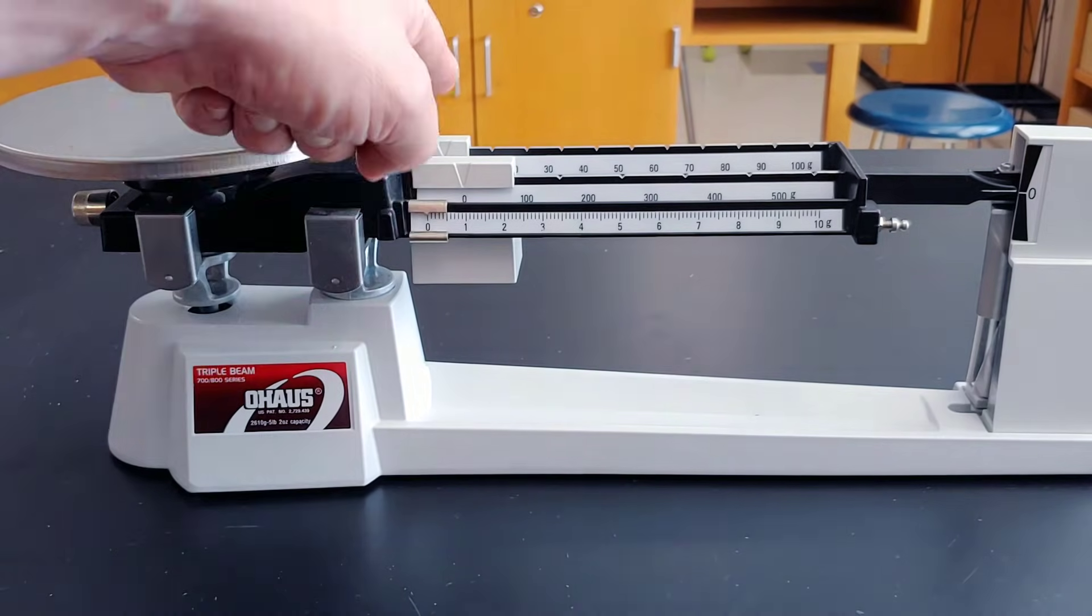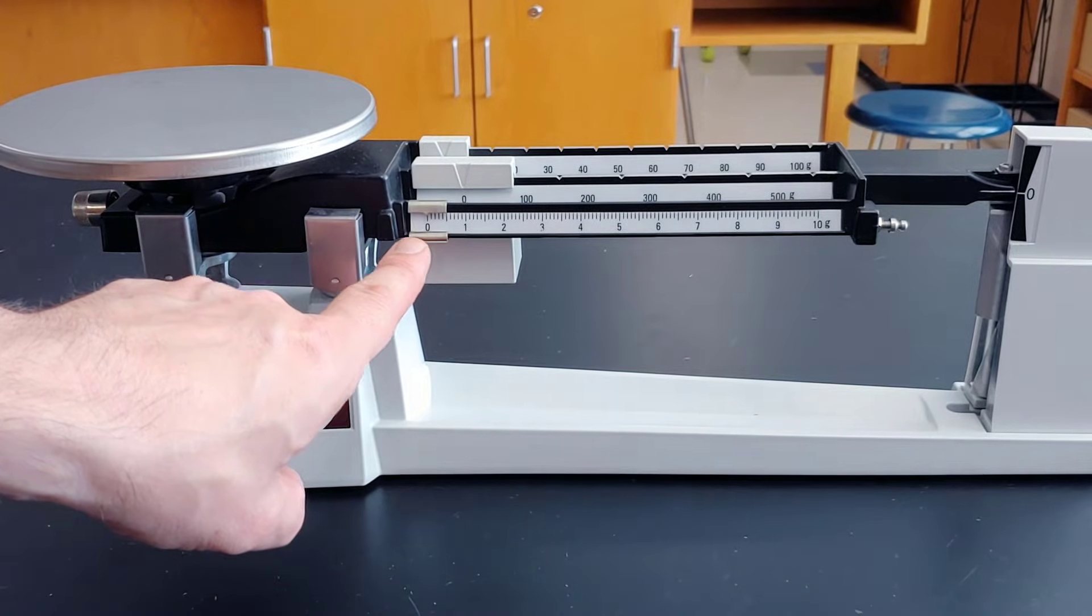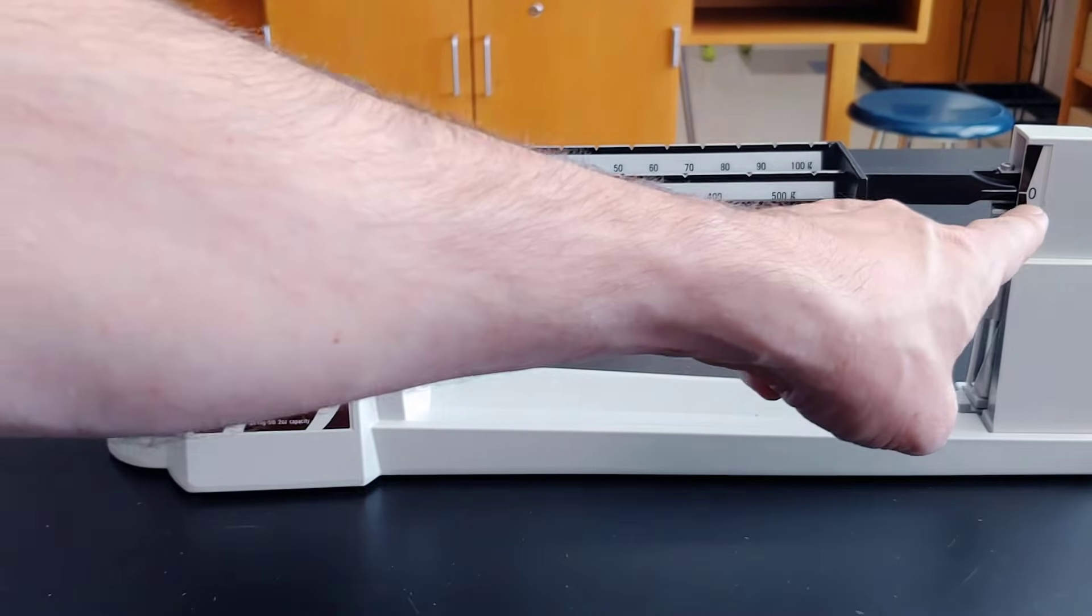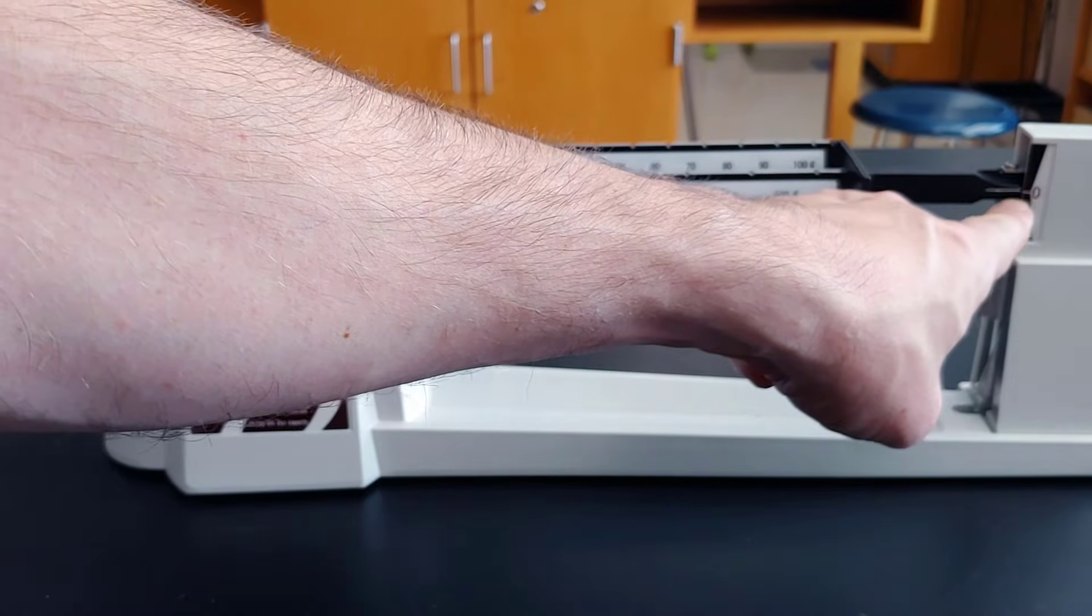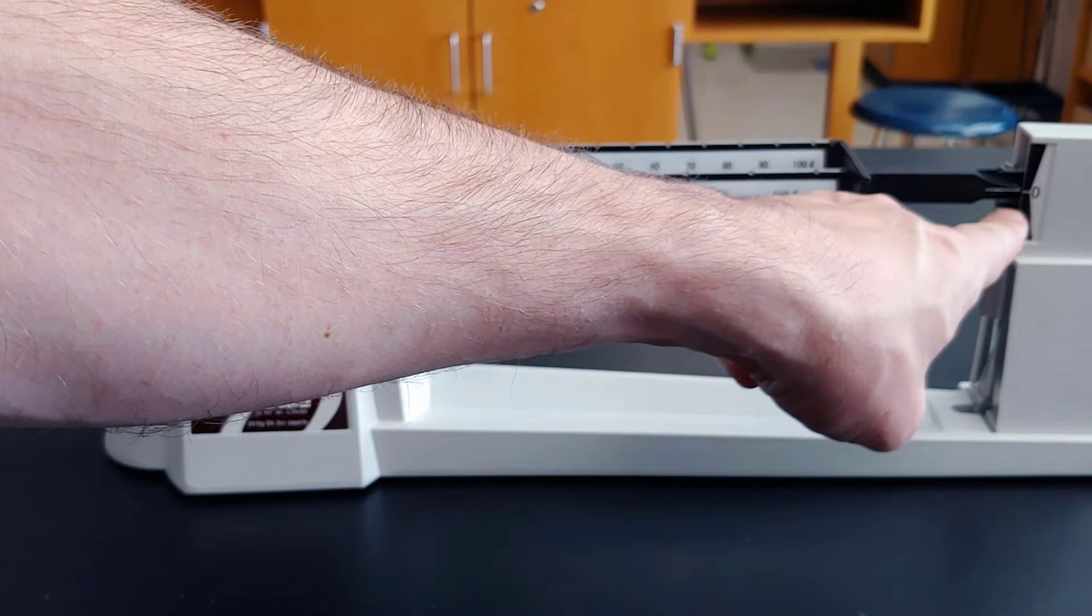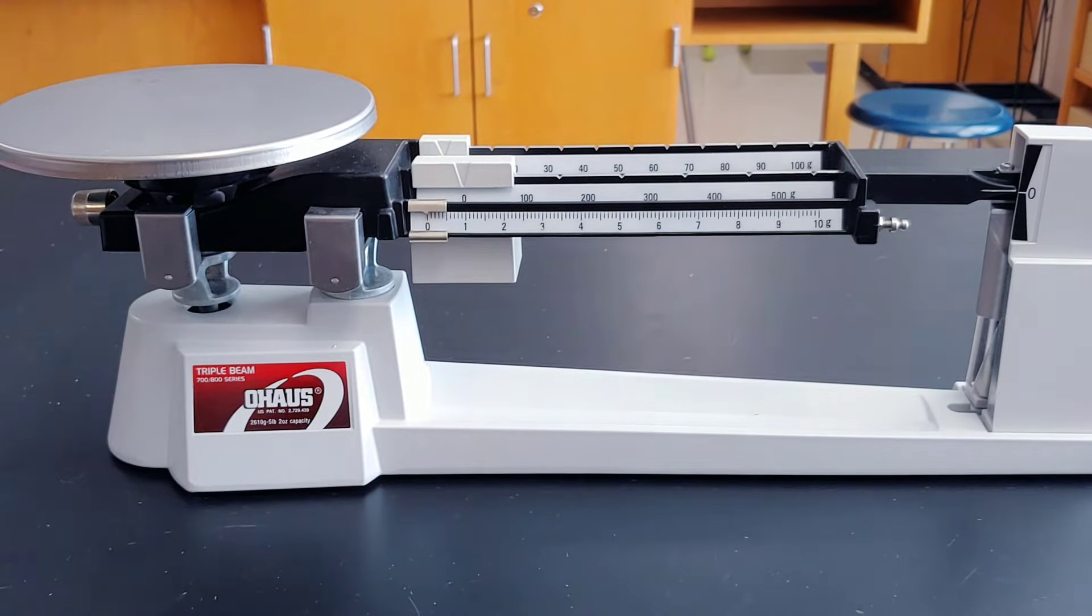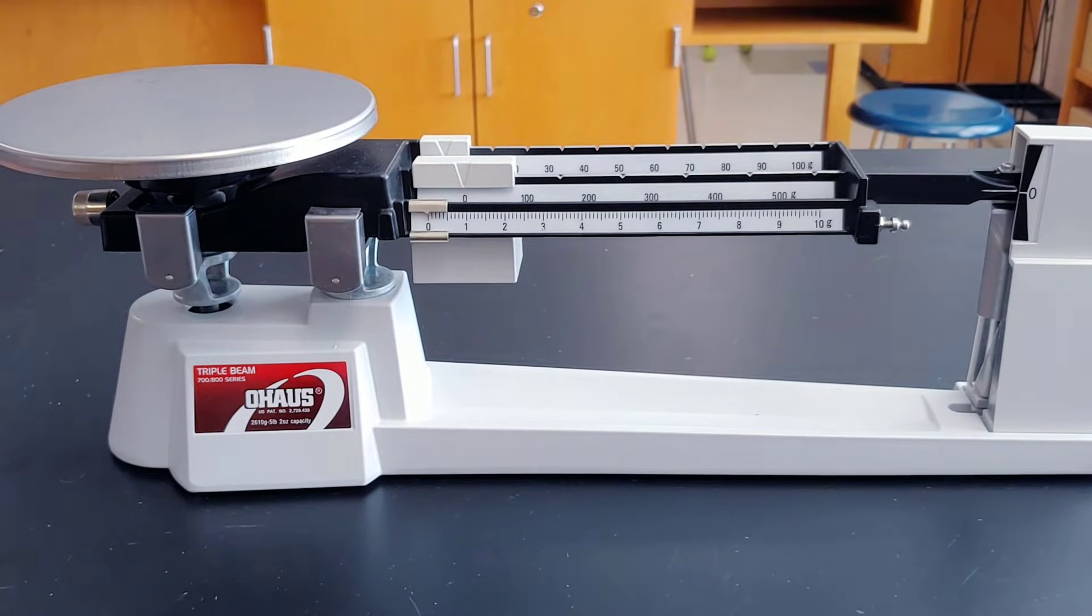All these should start off on the zero. This is called having it zeroed. And the line should also be on the zero. They should be matched up. If not, you may need to recalibrate your triple beam balance.